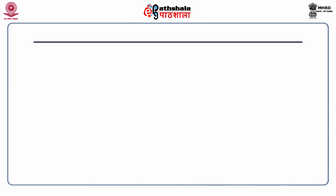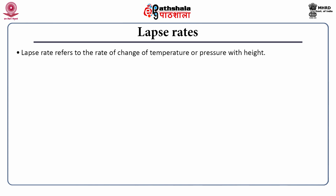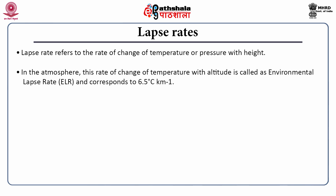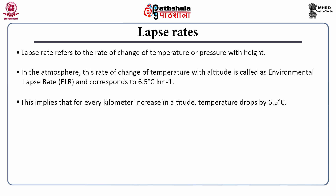Next, coming to lapse rate, it refers to the rate of change of temperature or pressure with height. In the atmosphere, this rate of change of temperature with altitude is called the environmental lapse rate, also known as ELR, and corresponds to 6.5 degrees Celsius per kilometer. This implies that for every kilometer increase in altitude, temperature drops by 6.5 degrees Celsius.